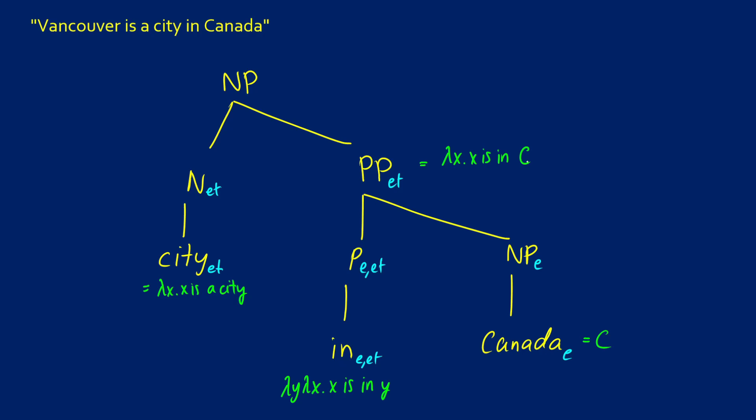And now, as we join with the ET and ET at the NP level, we're going to be able to conjoin the two. So what that means is we can take this x is a city, we can take x is in C, and we can conjoin them using and. So this is going to be lambda x dot x is a city and x is in C.